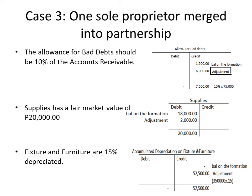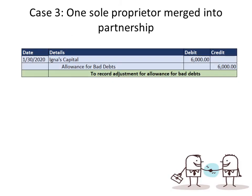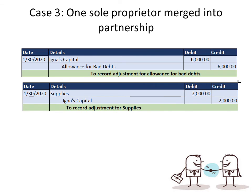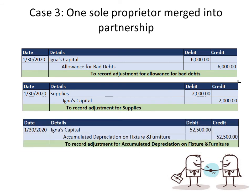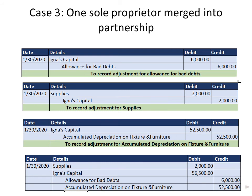As a rule, we first adjust all values in the books of the sole proprietor. The adjusting entries are: (1) Debit Igna's capital $6,000, credit allowance for bad debts $6,000 — to record adjustment for bad debts. (2) Debit supplies $2,000, credit Igna's capital $2,000 — to record adjustment. (3) Debit Igna's capital $52,500, credit accumulated depreciation on fixtures and furniture $52,500 — to record depreciation adjustment. The compound entry: debit supplies $2,000, credit Igna's capital $56,500; debit allowance for bad debts $6,000, credit accumulated depreciation on fixtures and furniture $52,500.